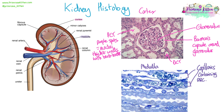In the medulla, first we've got two capillaries containing red blood cells, which are the darker blue-stained cells. Then we've got two loops of Henle — one in between the capillaries and one just below. We can identify these as loops of Henle because there's an empty white space in the middle and we can see large nuclei of the cells protruding out into the lumen.